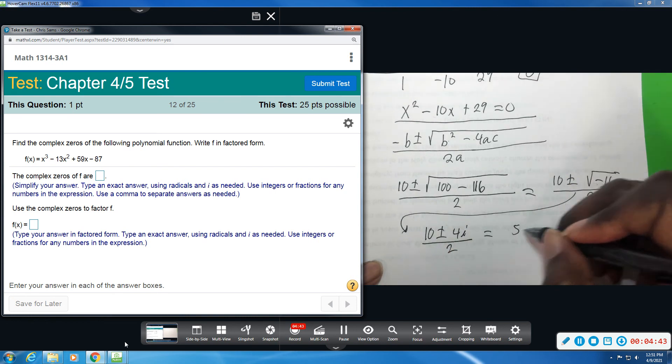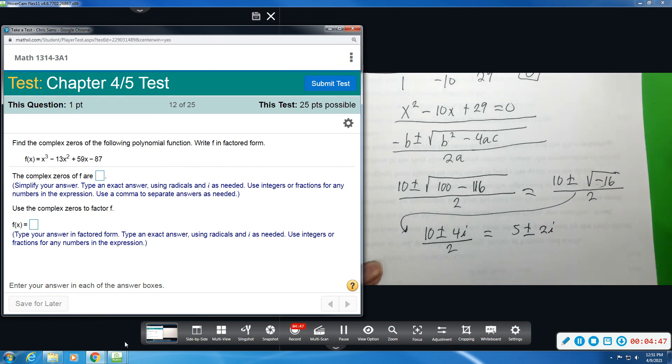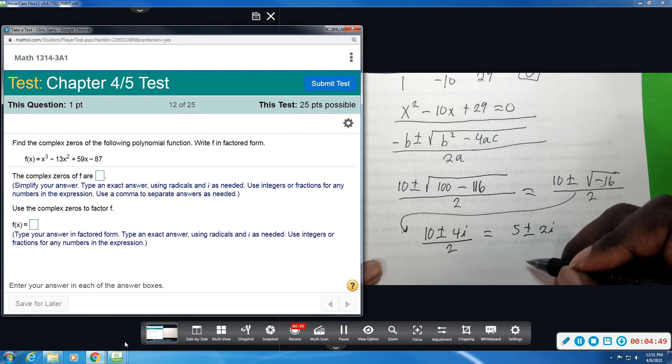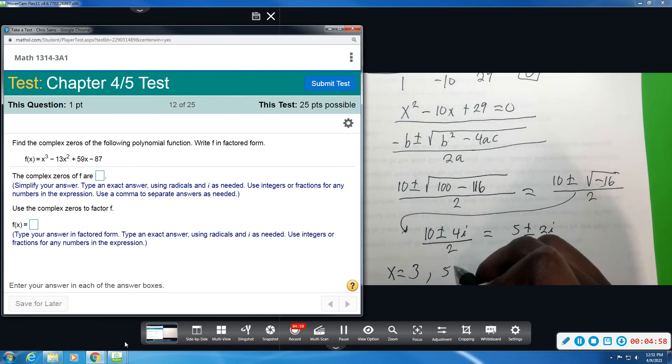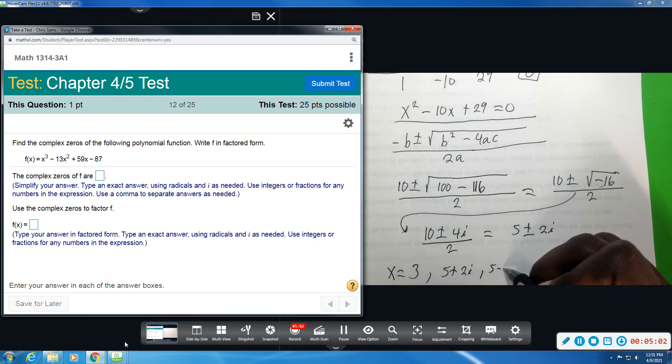Both of these terms are divisible by 2. So we get 5 ± 2i. All right, so all together, our zeros are x equals the 3 that we found at the beginning. And then 5 + 2i and 5 - 2i.